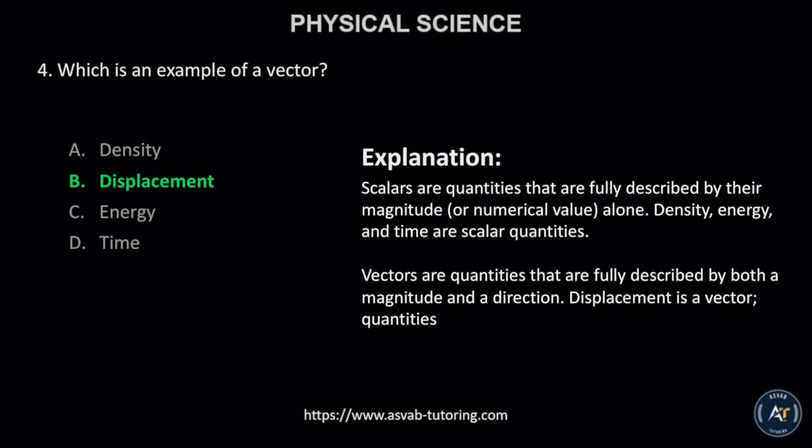The correct answer is B. Displacement. Scalars are quantities that are fully described by their magnitude or numerical value alone. Density, energy, and time are scalar quantities. Vectors are quantities that are fully described by both a magnitude and a direction. Displacement is a vector quantity.